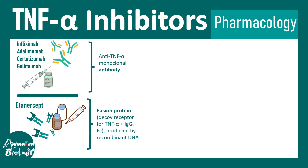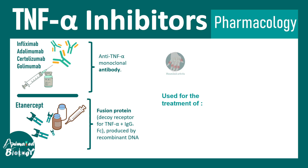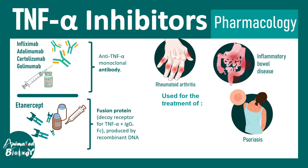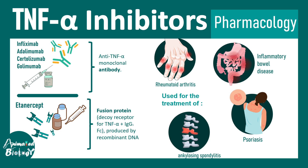There are five things that we would be talking about. First one is infliximab, then there is adalimumab, then there is certolizumab, and then golimumab. All these are monoclonal antibodies — anything that ends with 'mab' represents monoclonal antibodies. Each of them has therapeutic potential and they are all used for the treatment of rheumatoid arthritis, inflammatory bowel disease, psoriasis, or ankylosing spondylitis.